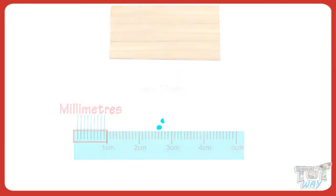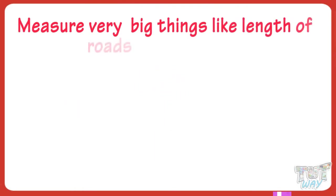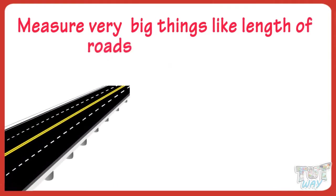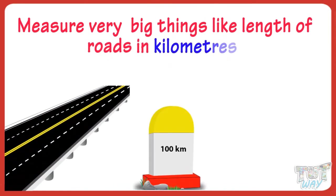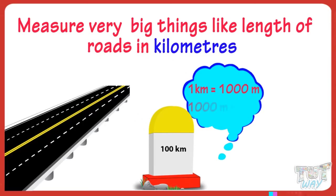We measure very big things like the length of roads in kilometers. 1 kilometer equals 1,000 meters, or 1,000 meters equals 1 kilometer.